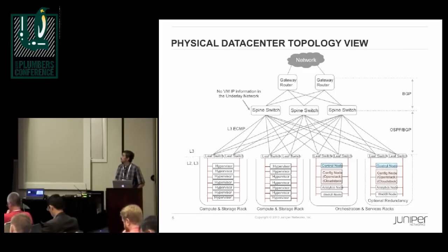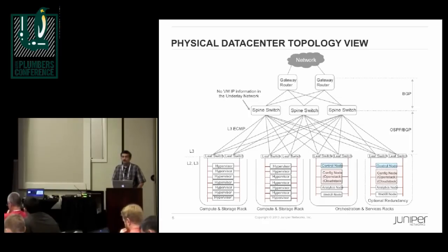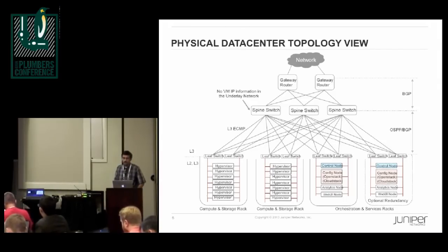In terms of the physical topology, a typical cloud data center has leaf and spine switches with an IGP between them. Gateway routers talk to the spine switches, and there are racks of servers where virtual machines run. Some of these racks can also be used to run elements of the Contrail solution — configuration, control, analytics, and the UI.